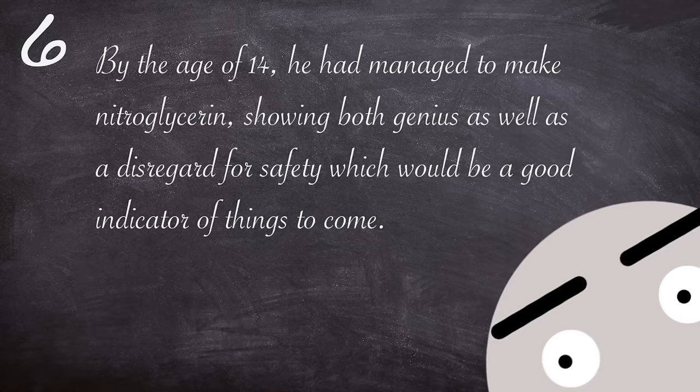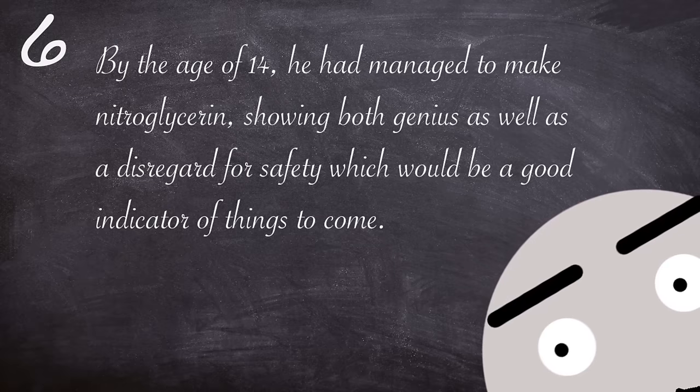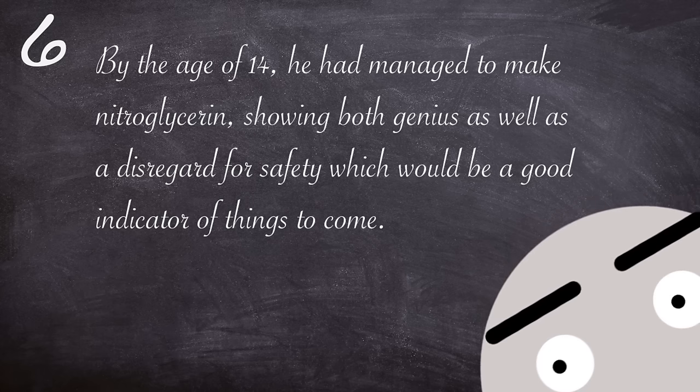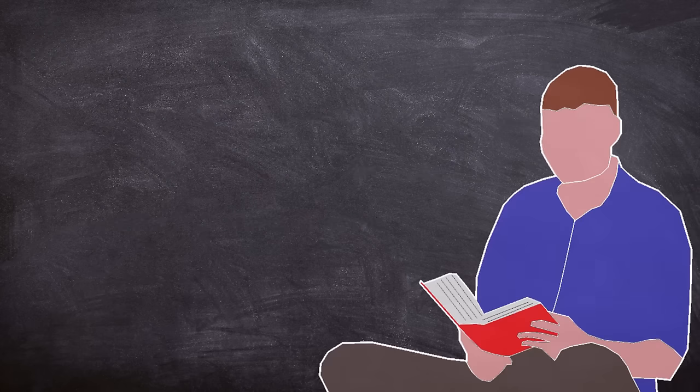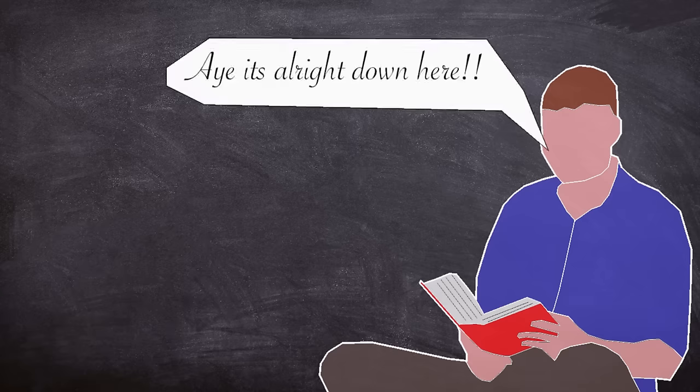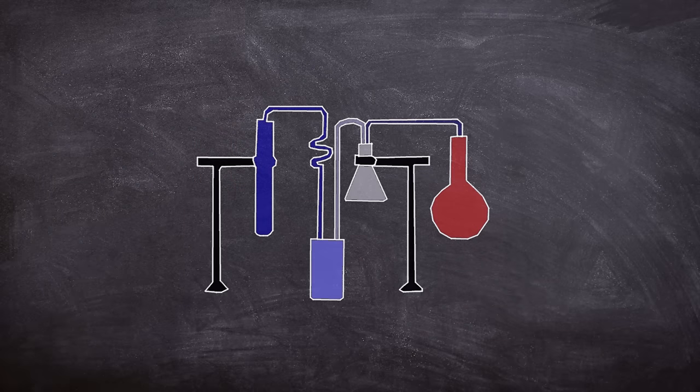By the age of 14, he had managed to make nitroglycerin, showing both genius as well as a flagrant disregard for safety, which would be a good indicator of things to come. The move to the basement allowed his experiments to go further unchecked, as David dived into the world of chemistry even more. Although he did well in science classes, the rest of his school career wasn't going well.